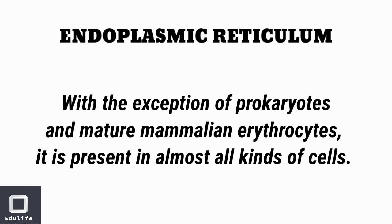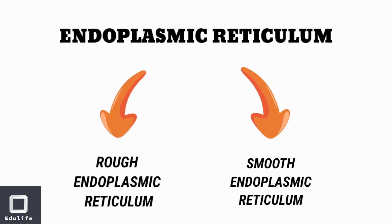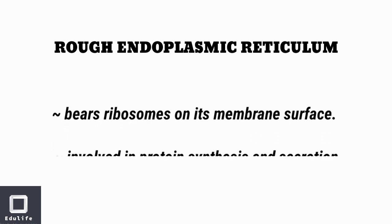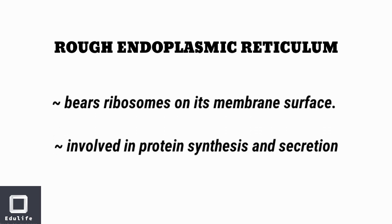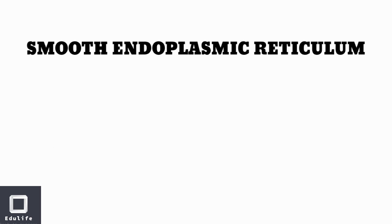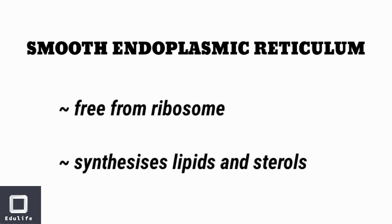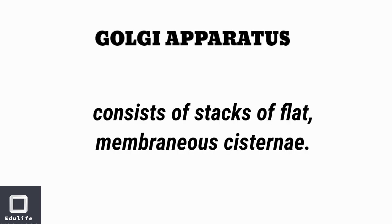ER is absent in prokaryotes and mature mammalian erythrocytes. There are two kinds of ER: rough endoplasmic reticulum and smooth endoplasmic reticulum. Rough ER has ribosomes on its membrane surface and is involved in protein synthesis and secretion. Smooth ER lacks ribosomes and is involved in synthesis of lipids and sterols.